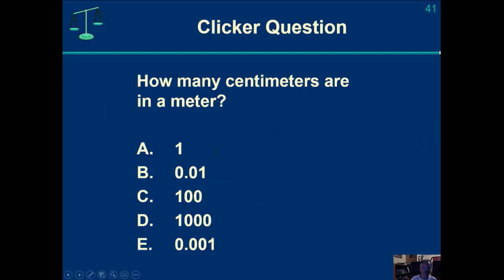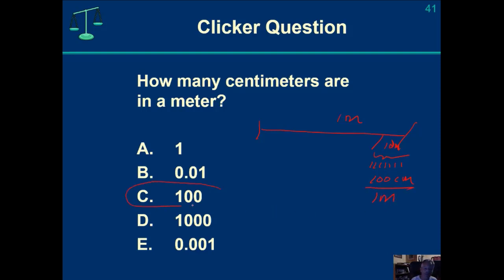How many centimeters are in a meter? If you remember, we had one meter that we could cut into ten decimeters, and each decimeter into ten centimeters — that's 10 times 10, which is 100 centimeters in every one meter. So C would be the answer in this particular case: there are 100 centimeters in one meter.